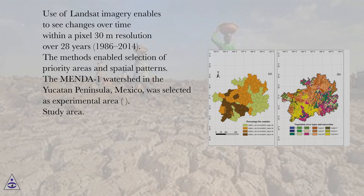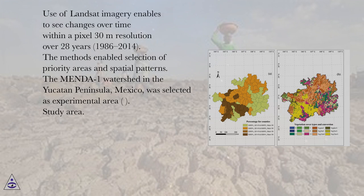The methods enabled selection of priority areas and spatial patterns. The Mendo 1 watershed in the Yucatan Peninsula, Mexico, was selected as the experimental area.